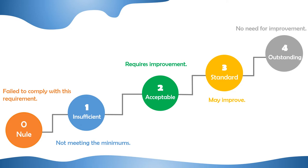Each standard is graded on a 0 to 4 scale. The evaluation of each standard is graded according to the following scale: 0 - Failed to comply with this requirement. 1 - Insufficient, not meeting the minimums. 2 - Acceptable, requires improvement. 3 - Standard, may improve. 4 - Outstanding, no need for improvement.